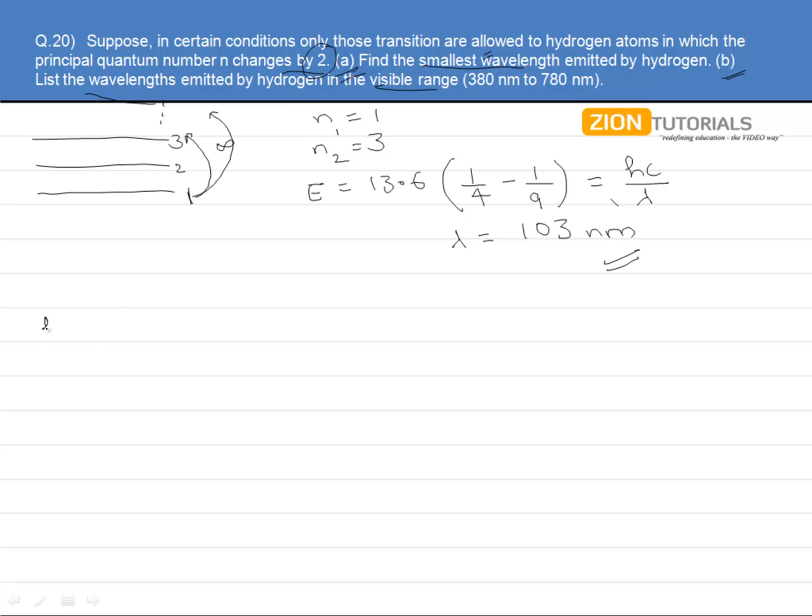Now proceeding to the second part in which we need to find the wavelengths in visible range. Now friends, we consider the case of 1 and 3. It is 103 less than 380. Then the other 2 unit change can be 2 to 4 or 3 to 5, 4 to 6.